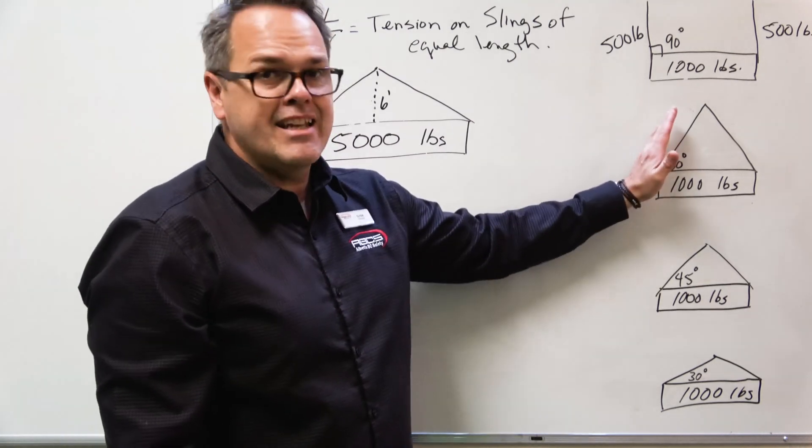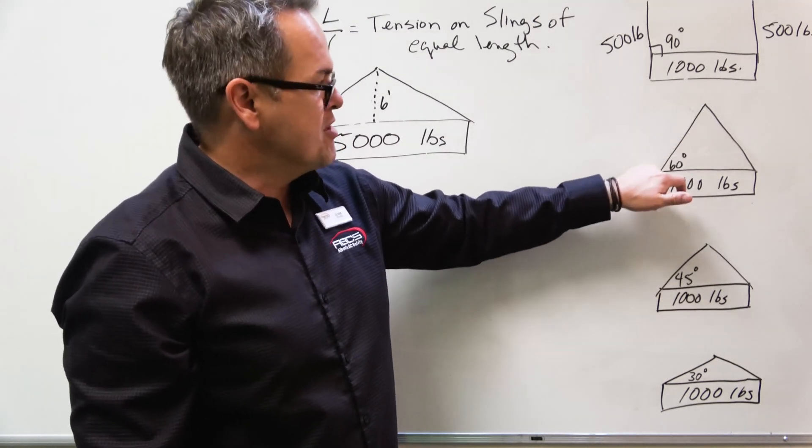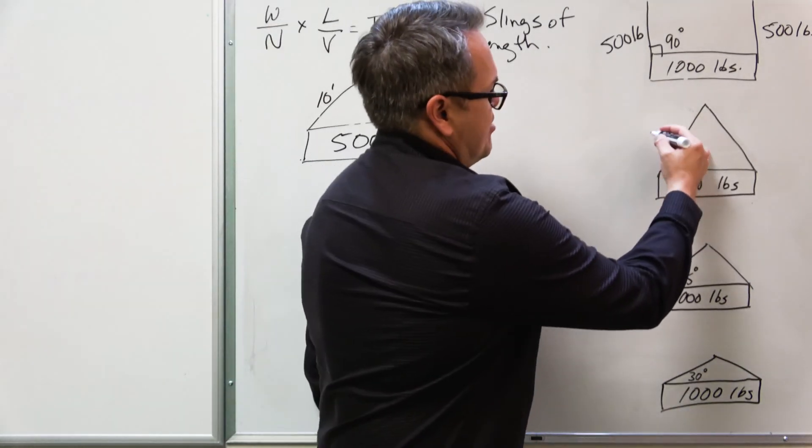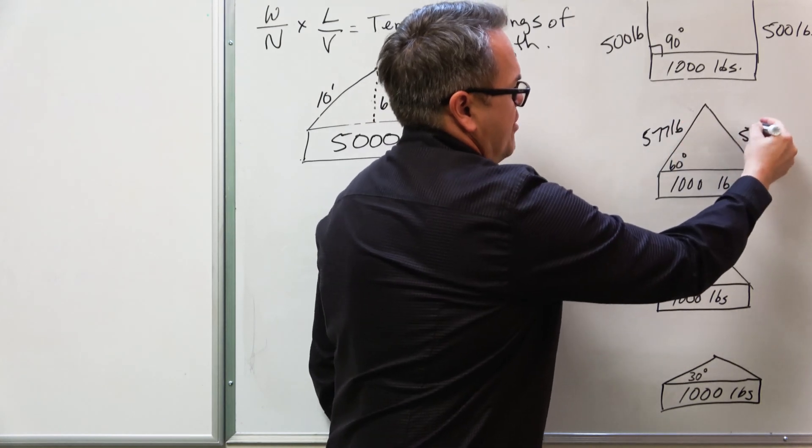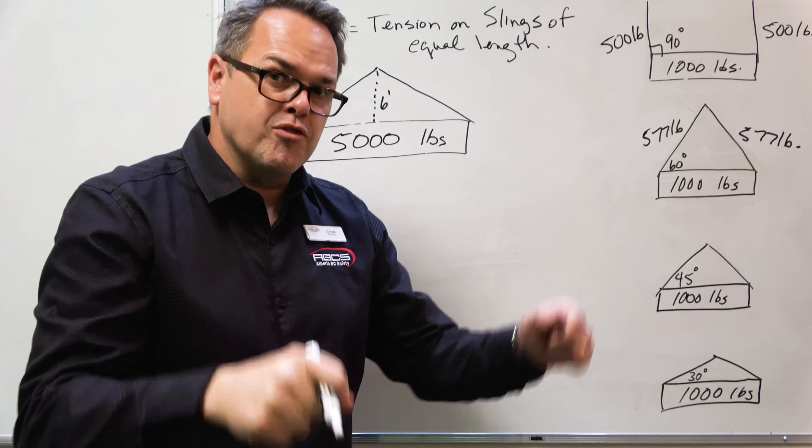Now, let's decrease that angle. Let's take it down to 60 degrees. Still lifting a thousand pounds. Let's measure how much force would be on each sling. It goes up a bit at 60 degrees. Now, each sling would have 577 pounds of force, straight pull force tension on it.